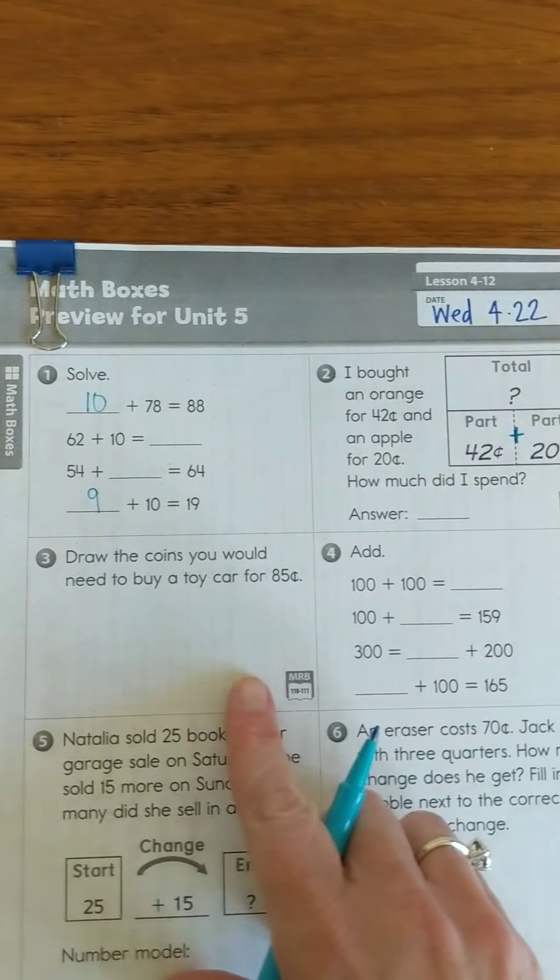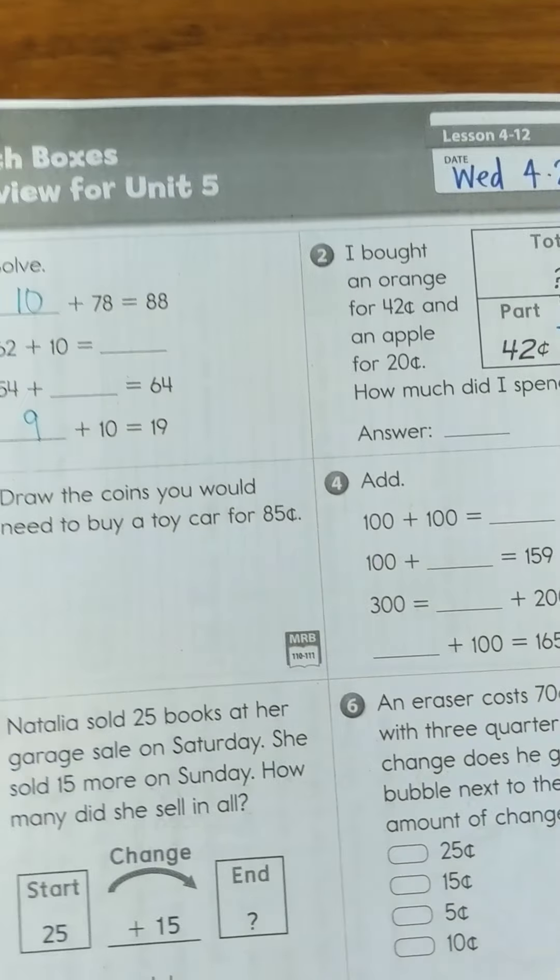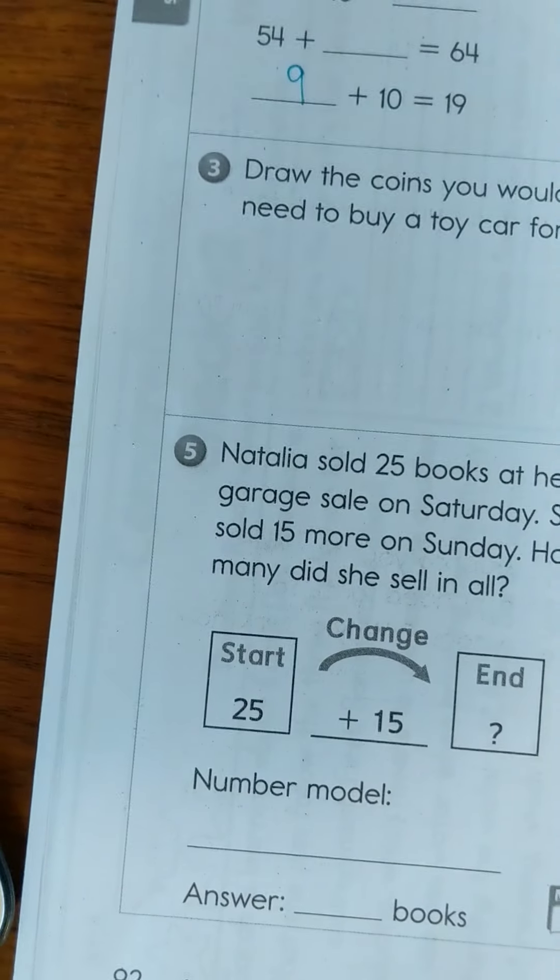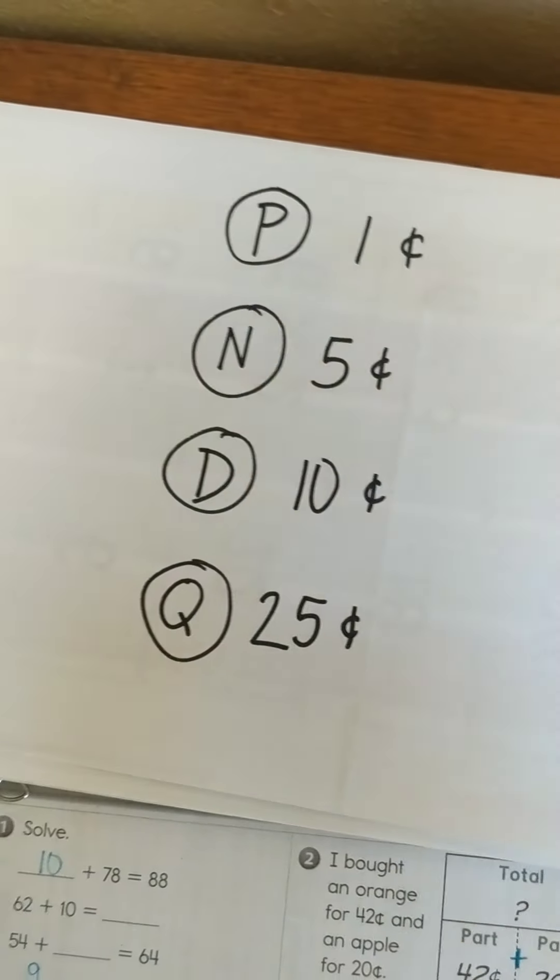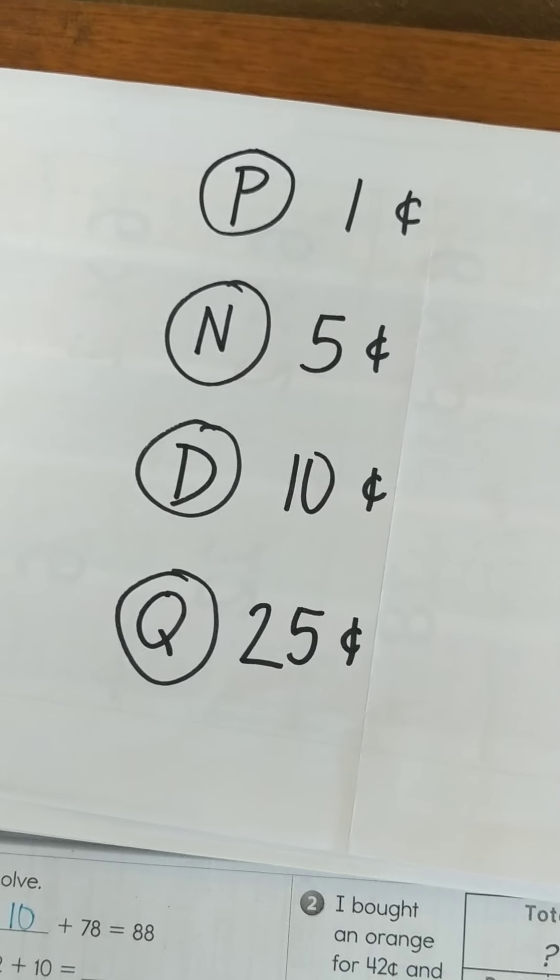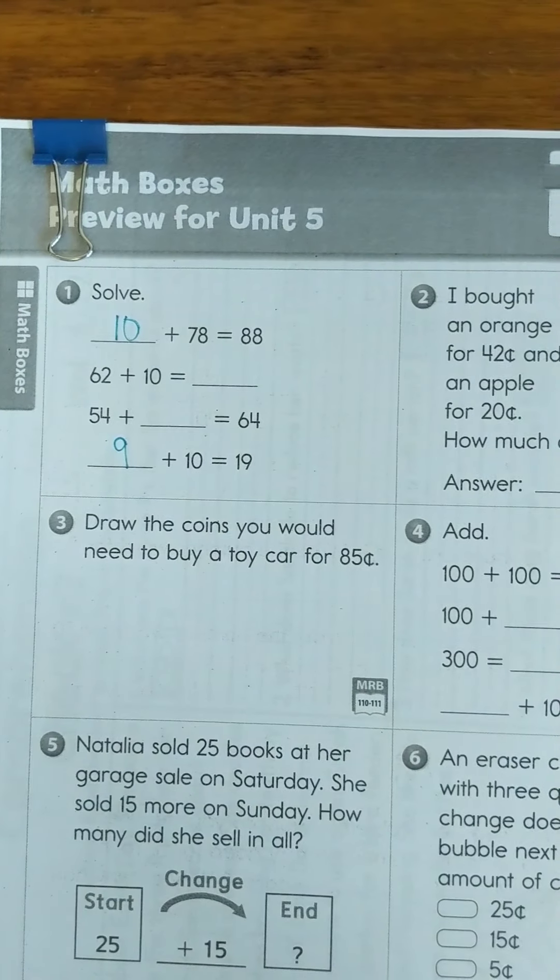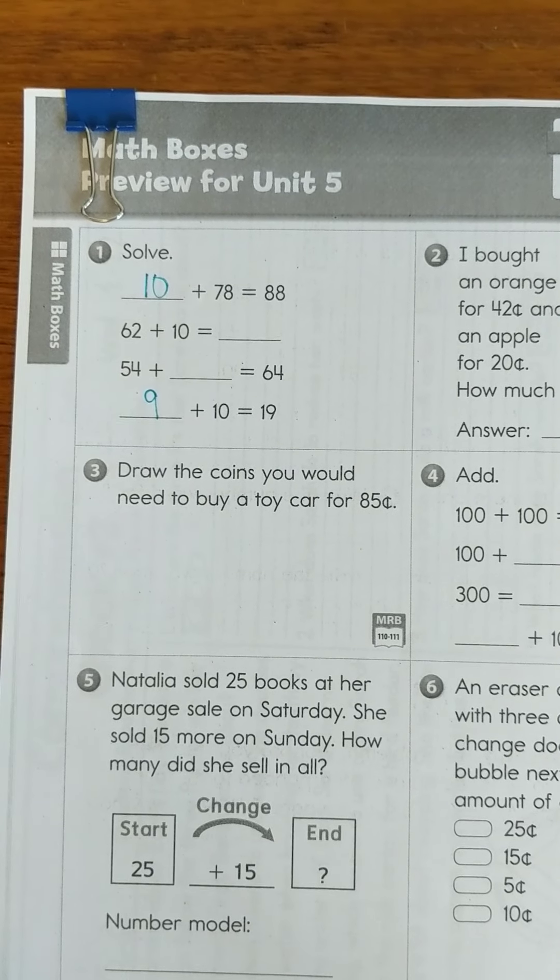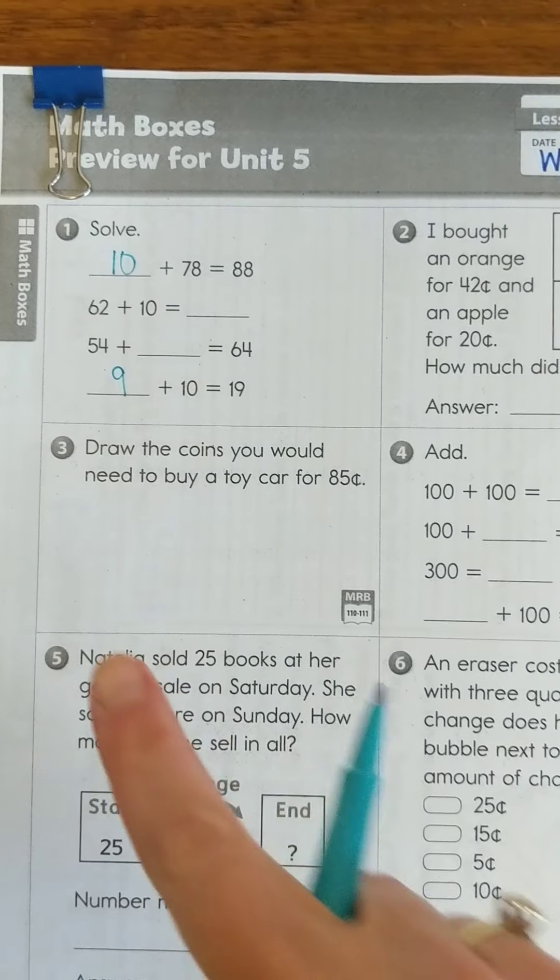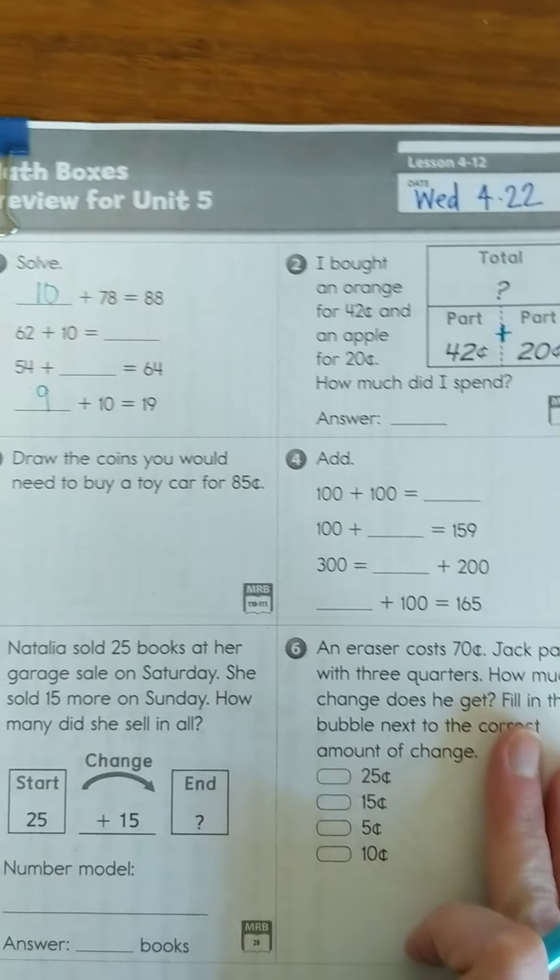Draw the coins you would need to buy a toy car for 85 cents. That's where you might want to get out if you ever made one, or you can draw one, a little cheat sheet of what the coins are worth. You want to draw the coins that you would need to buy a toy car for 85 cents. Your coins might look different than mine - the coins you use could be different, but I want you to find some combinations of coins that adds up to 85 cents.